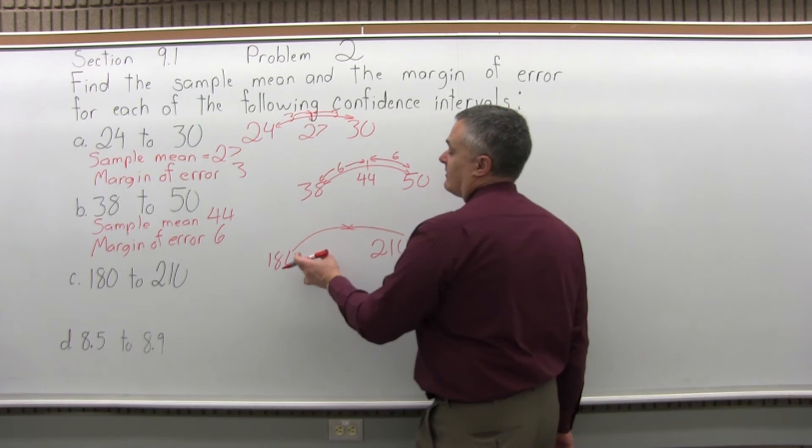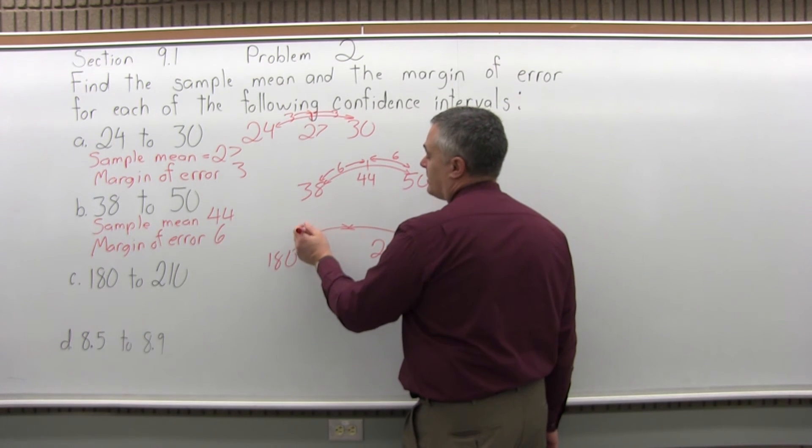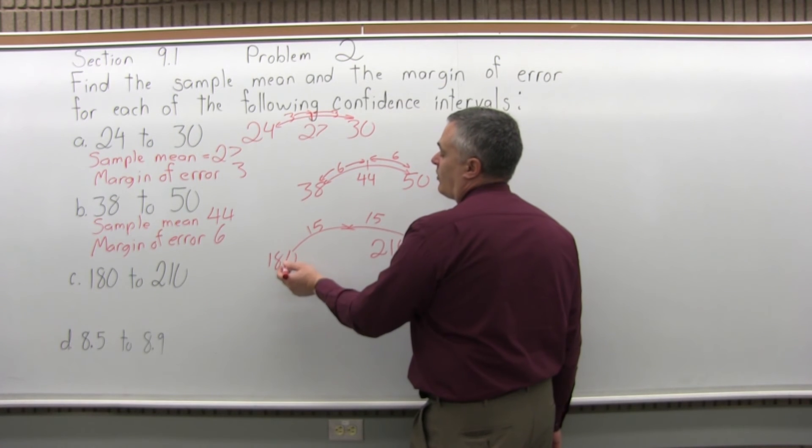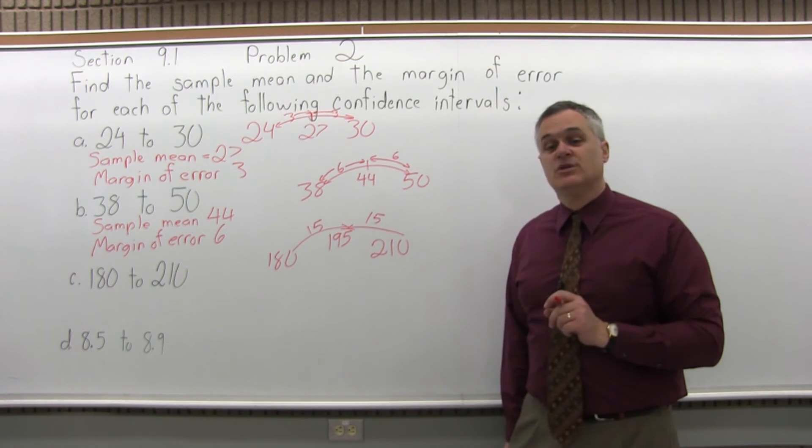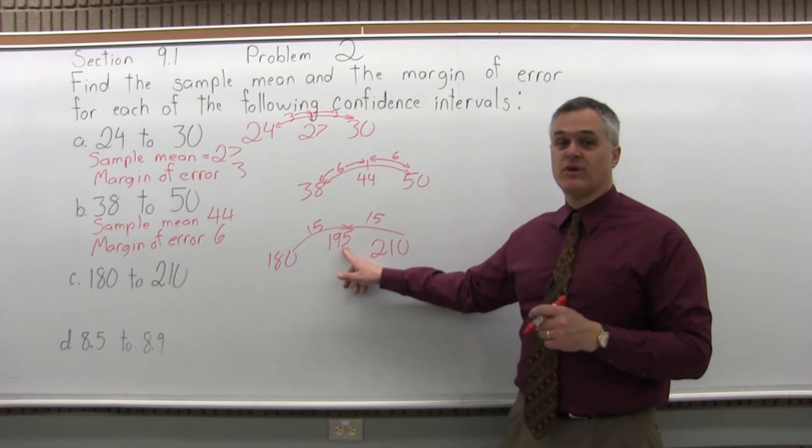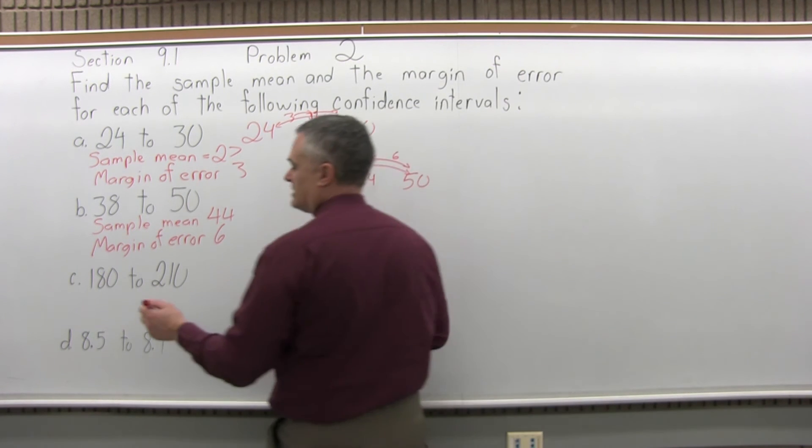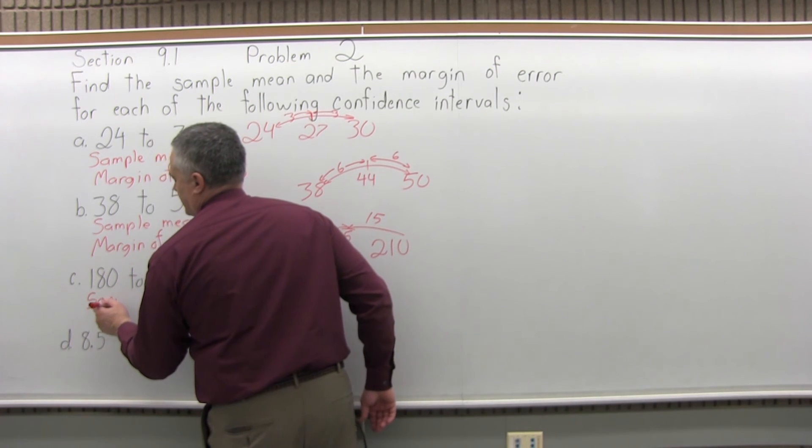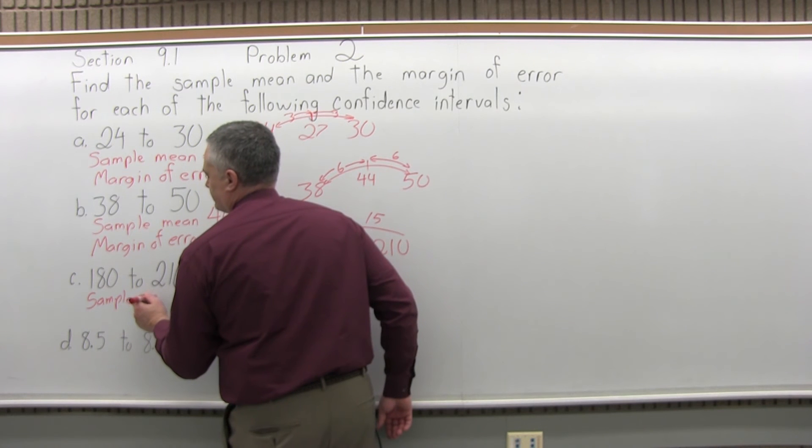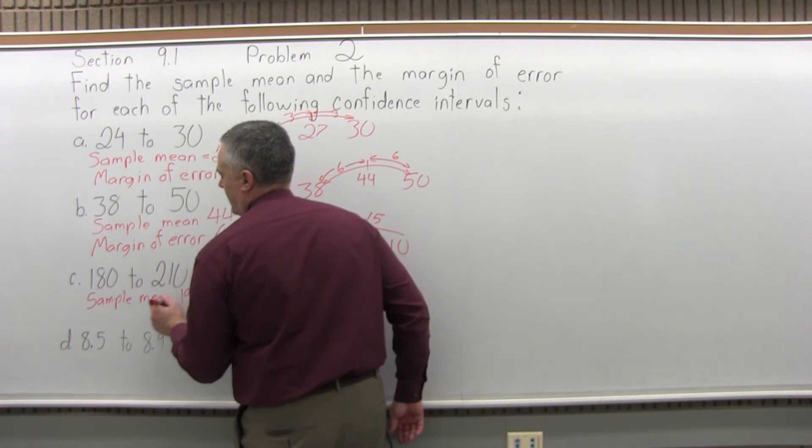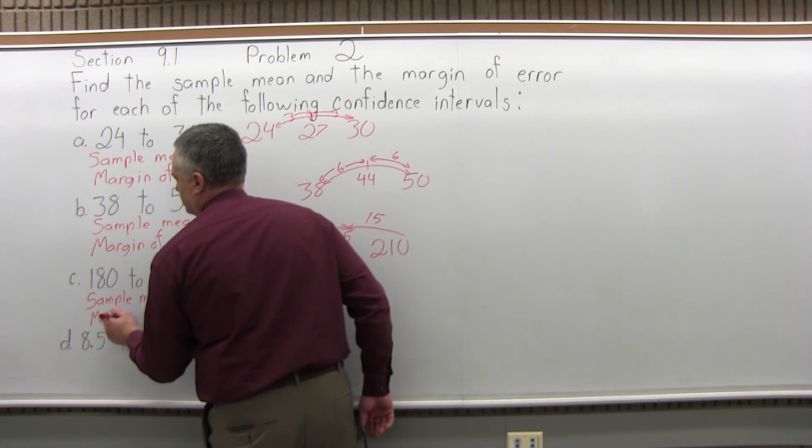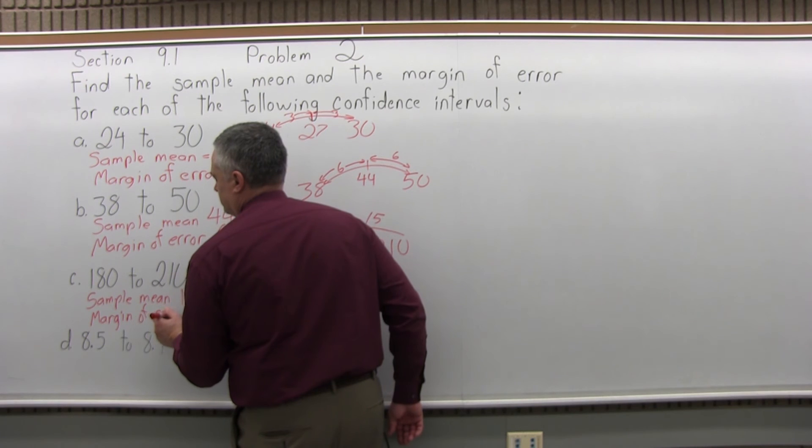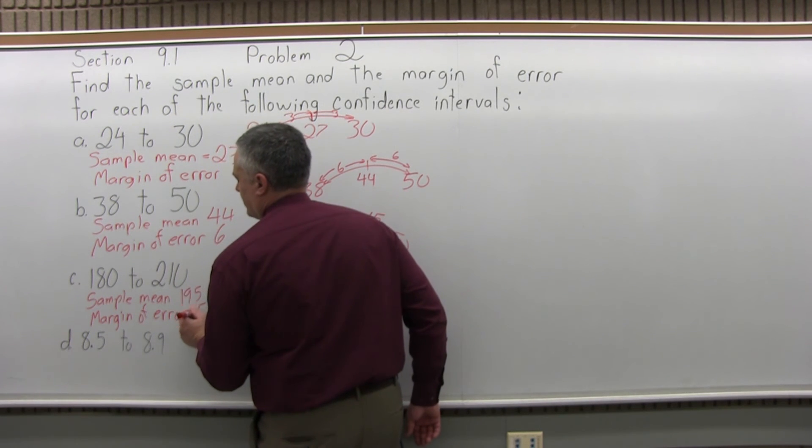So to go halfway, if the whole distance is 30, halfway would be 15. So 180 plus 15 is 195 and just to confirm 195 plus 15 more is 210. So the midway point 195 would have to be the sample mean for this confidence interval. So sample mean is 195, margin of error 15.